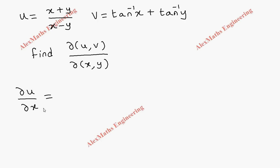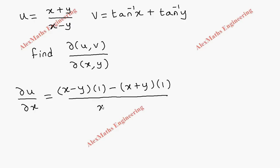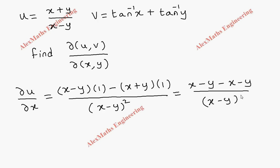For the partial differentiation of u with respect to x, where y is constant, by the quotient rule formula we write the denominator as it is and differentiate the numerator, which gives 1, minus the numerator as it is times the differentiation of the denominator, which is 1, all divided by (x minus y) whole square. Simplifying: (x minus y) minus (x minus y) divided by (x minus y)², we cancel terms and are left with minus 2y divided by (x minus y) whole square.